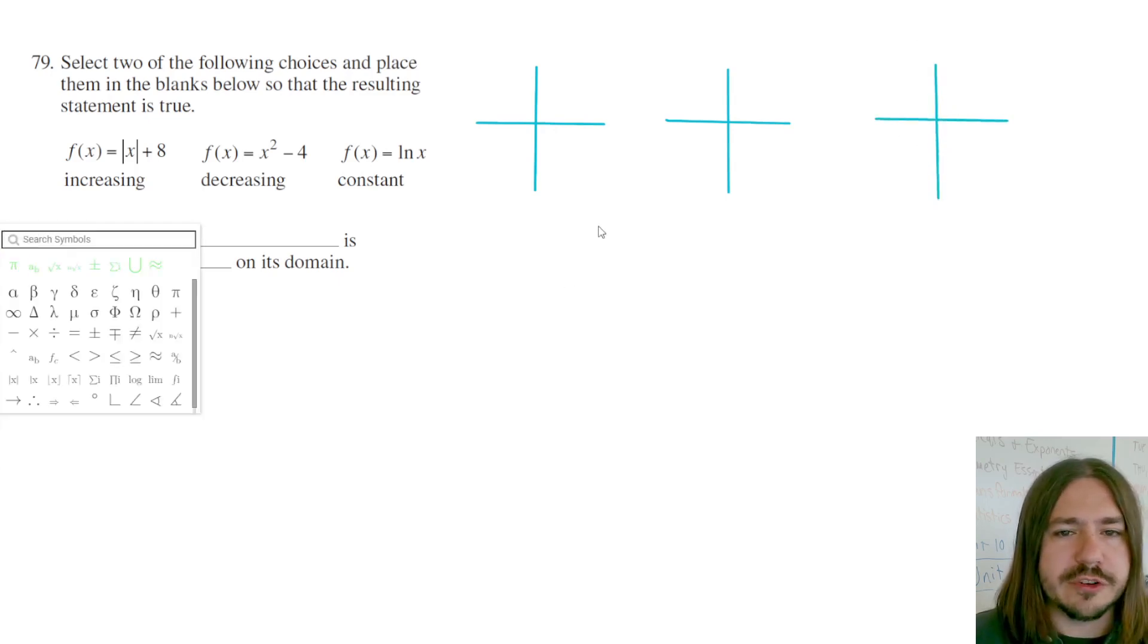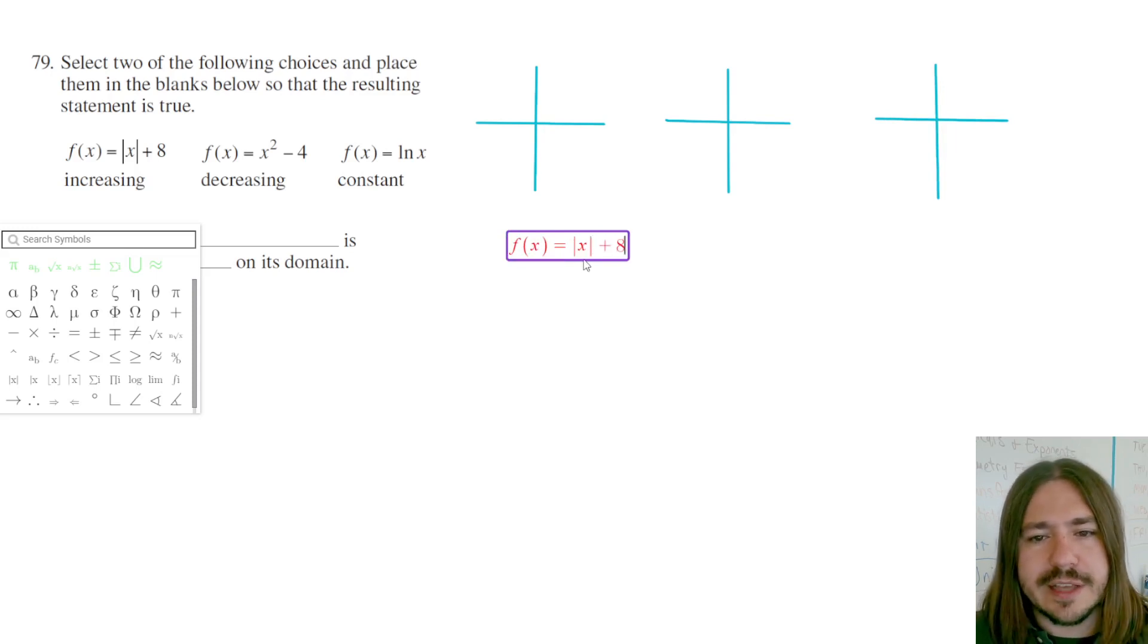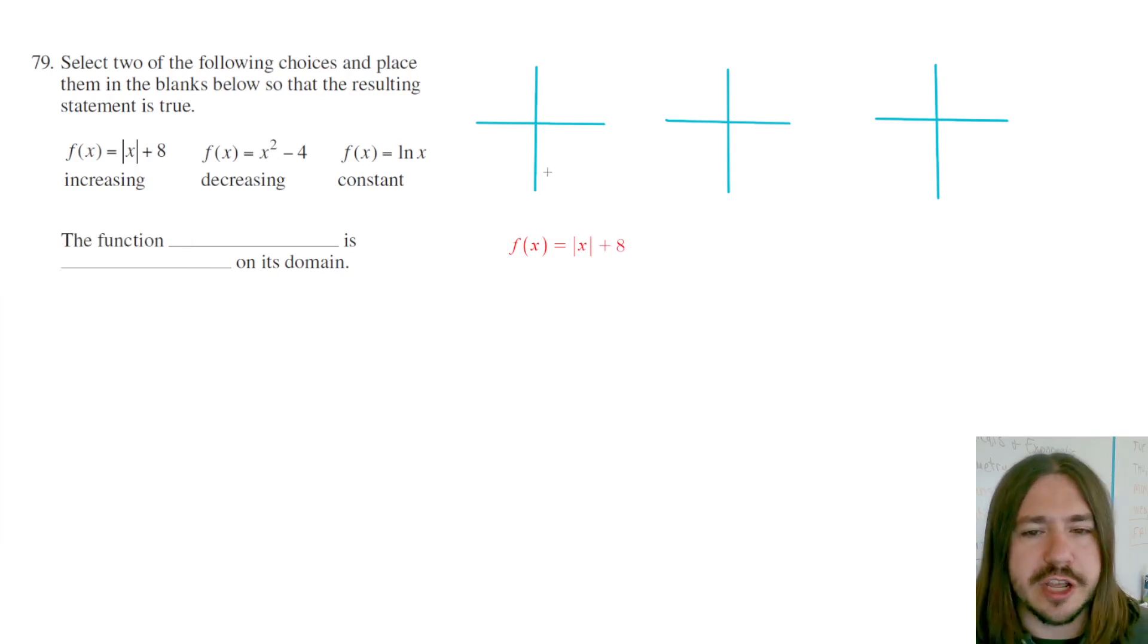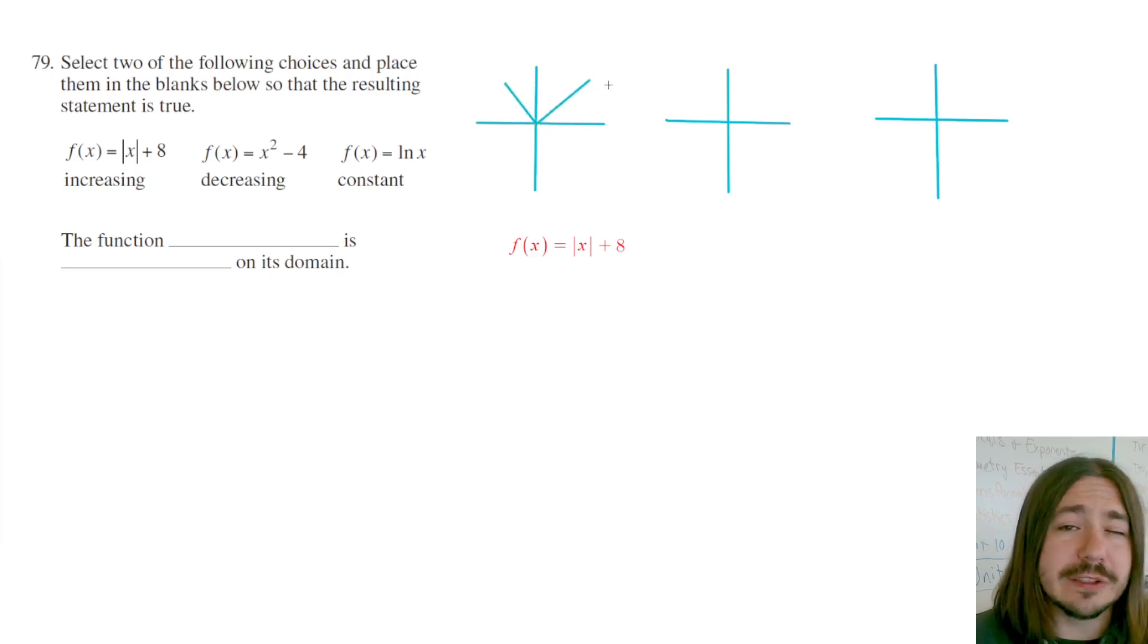So first, let me just give you a good idea of what these graphs are going to look like. f(x) equals absolute value of x plus 8. The plus 8, while that does change the graph a little bit, it's not going to change the overall shape of the graph. Whenever you have an absolute value function and it's just x inside, it's just going to be the graph of a V. So this right here would be what absolute value of x looks like. The plus 8, all that does is shift the graph up 8 units. That plus 8 is not going to affect how we answer this question, but essentially this is what the graph looks like.